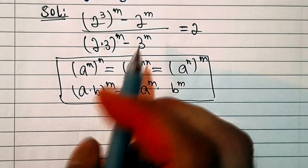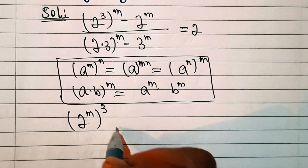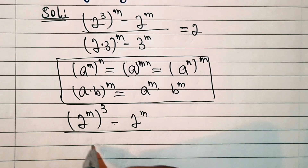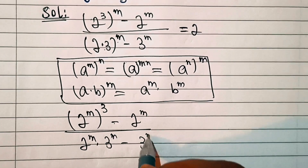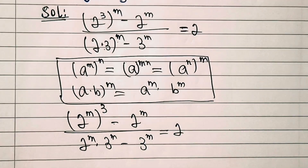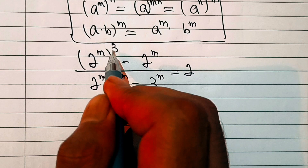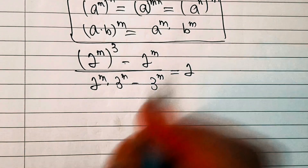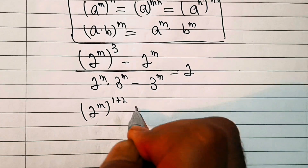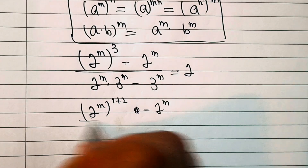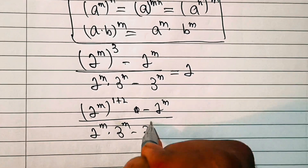Applying these formulas gives us (2^m)^3 - 2^m, divided by 2^m · 3^m - 3^m, equal to 2. Now we separate the exponent 3 as 1 plus 2, which will help us further simplify. That gives us (2^m)^(1+2) - 2^m, over 2^m · 3^m - 3^m, equals 2.